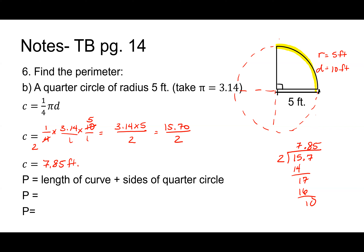Am I done? No — all that gave me was the curved portion. I have two more straight sides to add in — this side and that side, each 5 feet. So perimeter equals 7.85 plus 5 plus 5, which is plus 10. I wanted you to see that I'm adding 5 for each straight side. The answer is 17.85 feet.